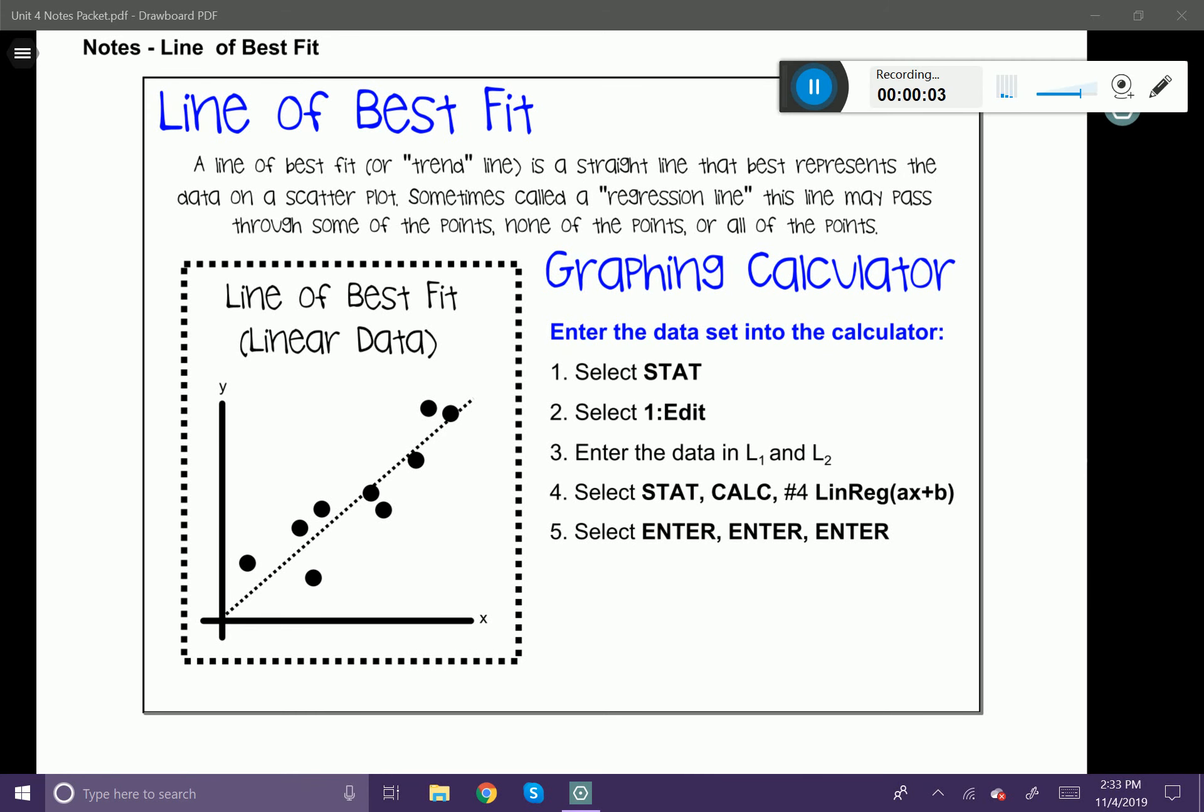In this lesson we're going to be talking about a line of best fit. A line of best fit, or also known as a trend line, is a straight line that best represents the data on a scatter plot.